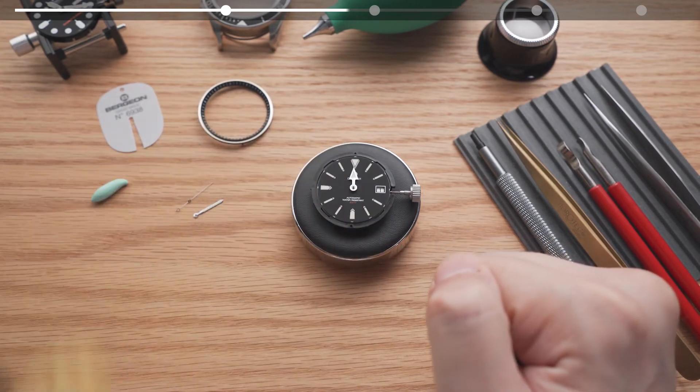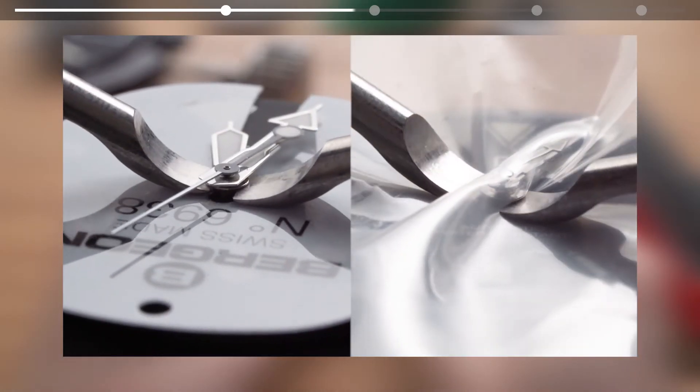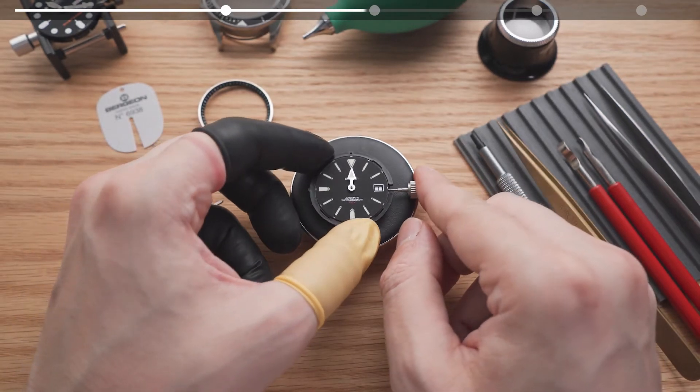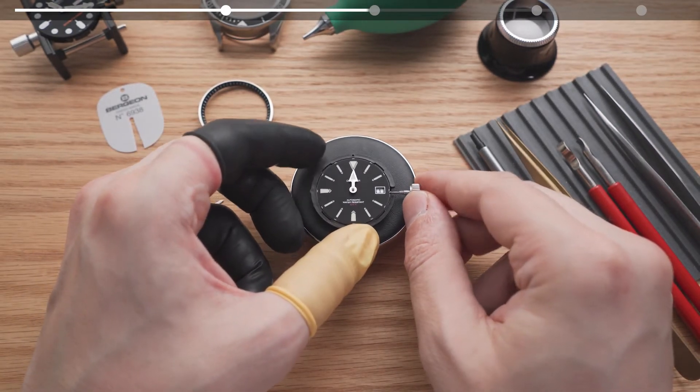If your watch hand alignment is off, the best practice is to remove and reinstall it. We have a link for our watch hand removal guide in the description. Keep in mind that the watch hands can become loose if you remove and reinstall them too many times.